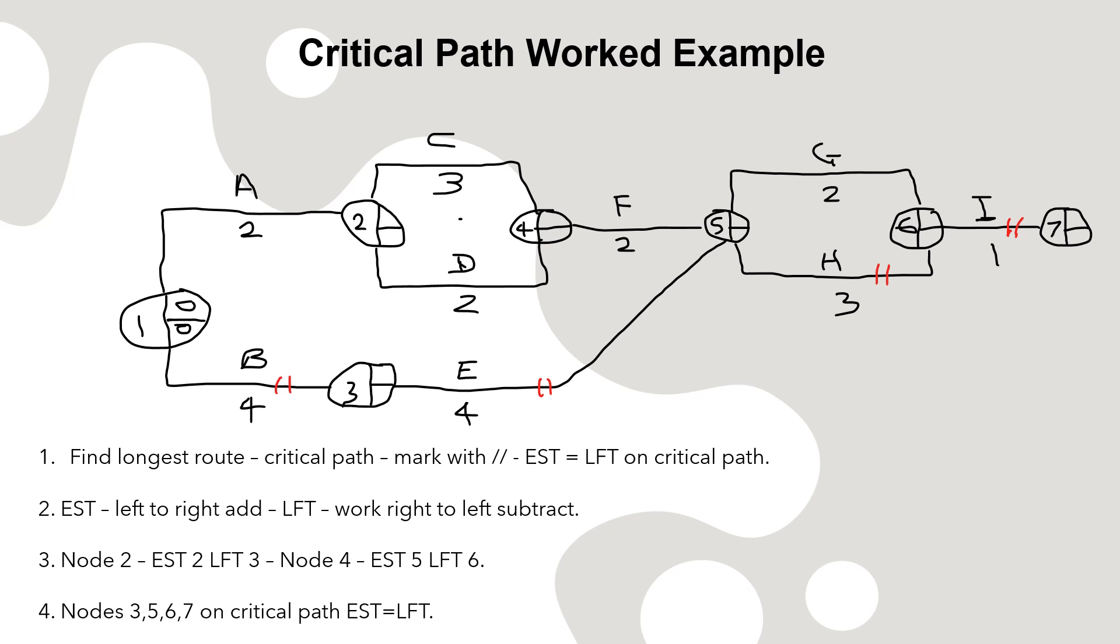Once you've got a critical path, it then becomes easy. To work out node four, node two - if you go from node one, you add. So node two becomes two. Activity C is three. Again, add - two plus three is five. Now work backwards from four. Four take two is two, and you've completed the diagram.